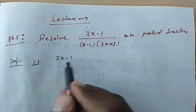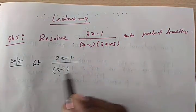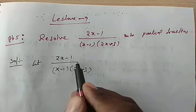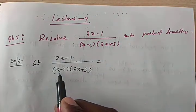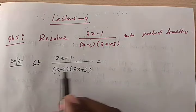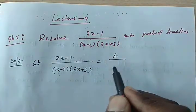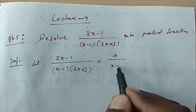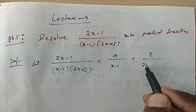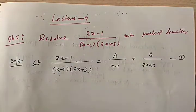Let (2x - 1) / [(x - 1)(2x + 3)] equal A/(x - 1) + B/(2x + 3). Clearly these two are distinct linear factors in the product, so that is why I am writing A/(x-1) plus B/(2x+3). Call this equation 1.